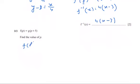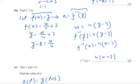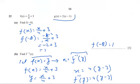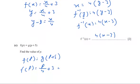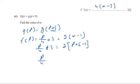Part c: f(p) = g(p + 5). So f(p) = p/4 + 3, replacing x with p. For g, the function is g(x) = 2(x - 1), and we replace x with p + 5. So p/4 + 3 = 2(p + 5) - 1, which gives p/4 + 3 = 2p + 4.